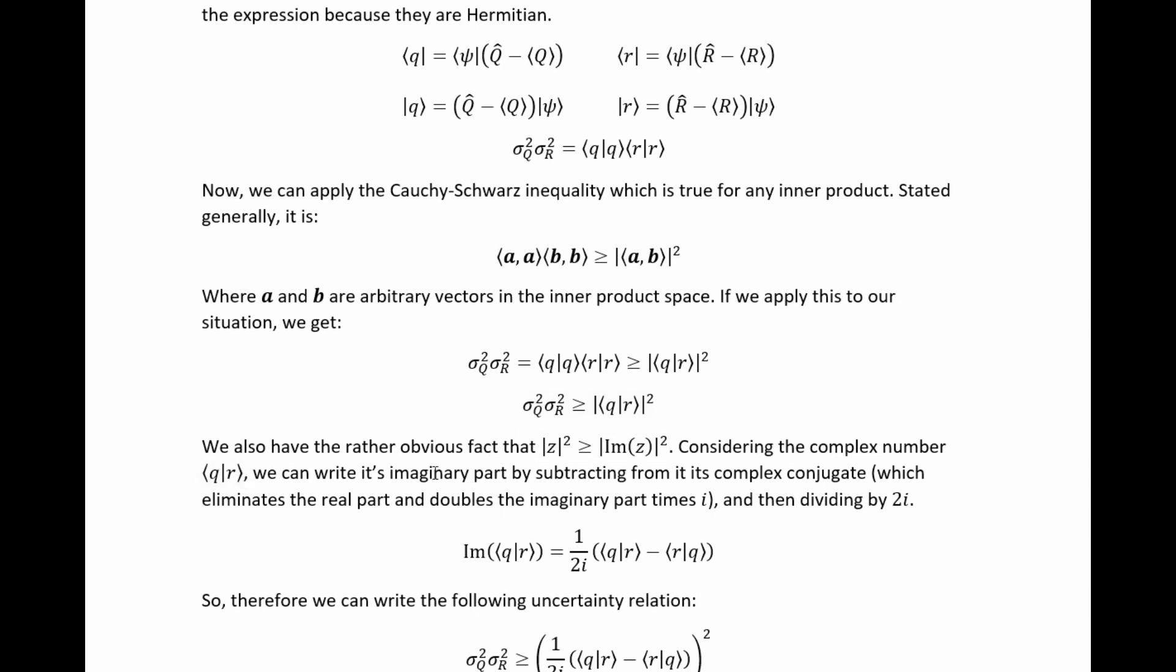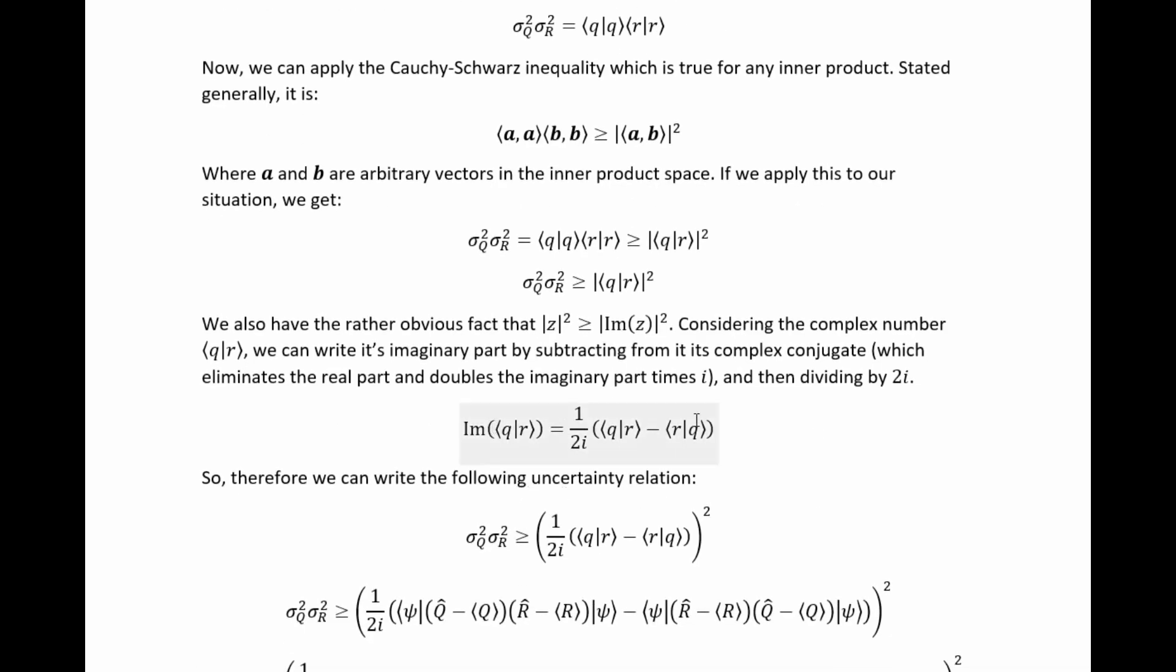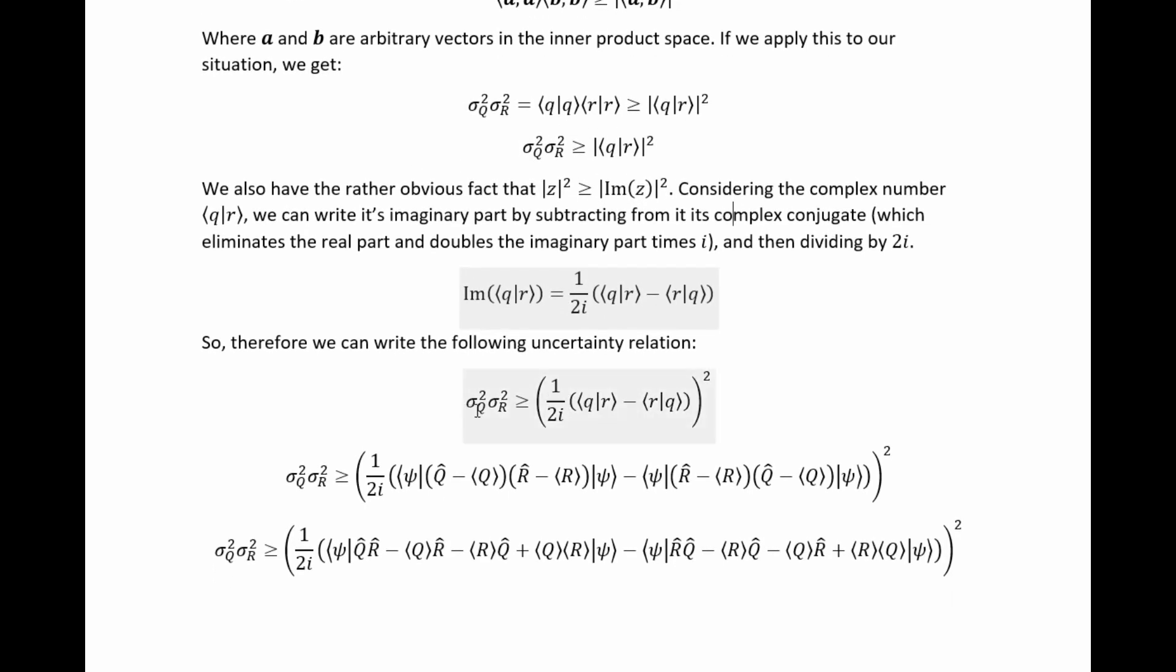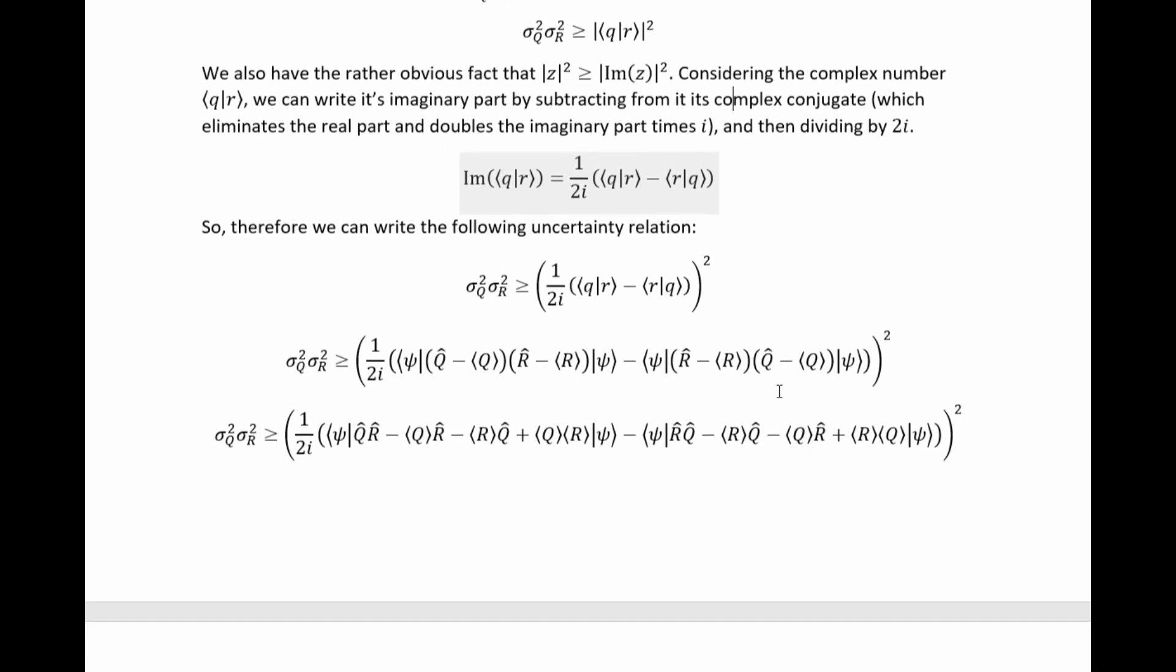Now, we can write out its imaginary part in a useful way. If we take this and subtract its complex conjugate, then we get 2i times the imaginary part. And so, we can just divide that out to get the imaginary part. And so, we arrive at this here. So, now, if we take the square of this, we know that that will always be less than or equal to the absolute square of the number we started with, this one. So, it's consistent with the inequality relation we already have to write this inequality relation.